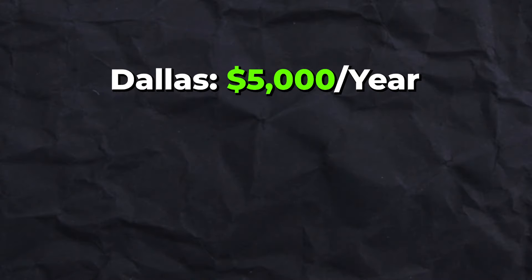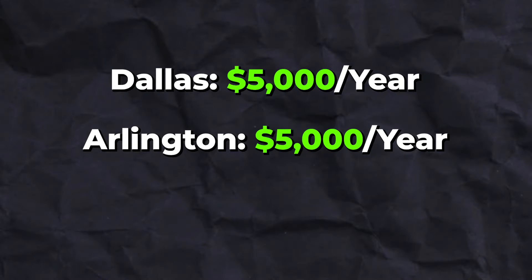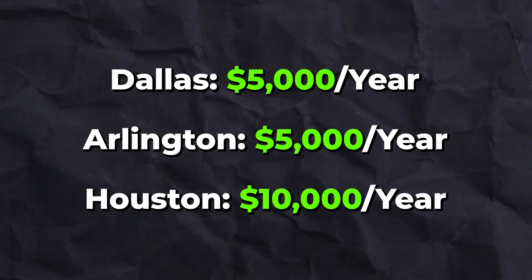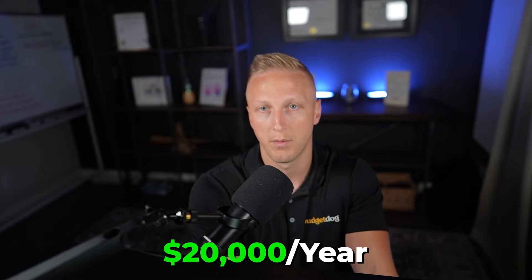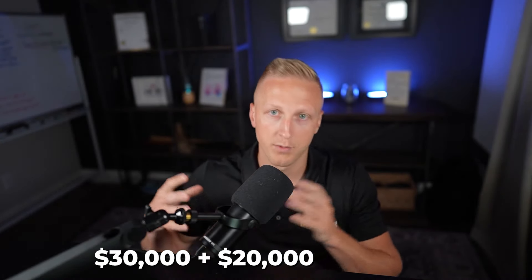We have one in Dallas at about five thousand per year, one in Arlington at about five thousand per year, and one in Houston where we put more money in, so we get a bigger payout of about ten thousand per year. All of these together are about twenty thousand a year in cash payments at the current moment, and we'll be stacking more with time. So between our dividends of thirty thousand and our real estate mailbox money of twenty thousand, we're making about fifty thousand a year. I won't go into how depreciation of the real estate wipes that income out, but it does, and it's very important to understand how that works.